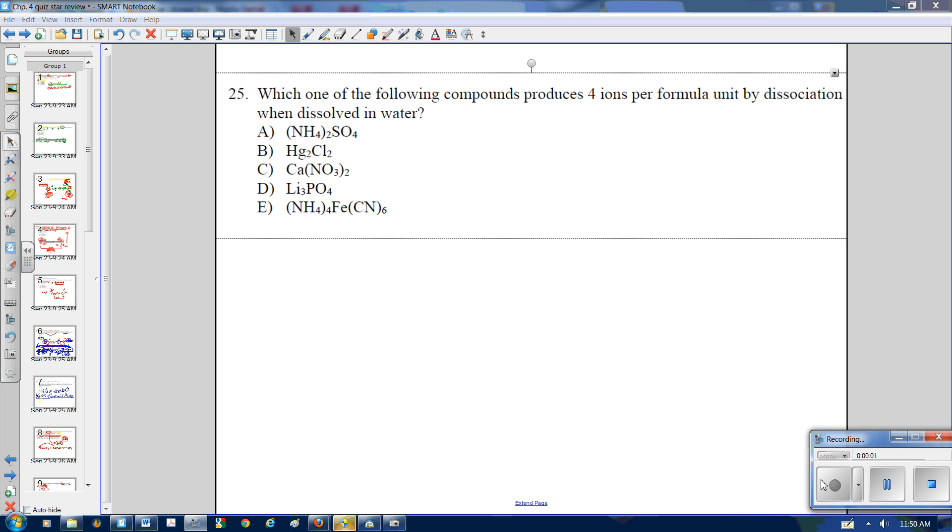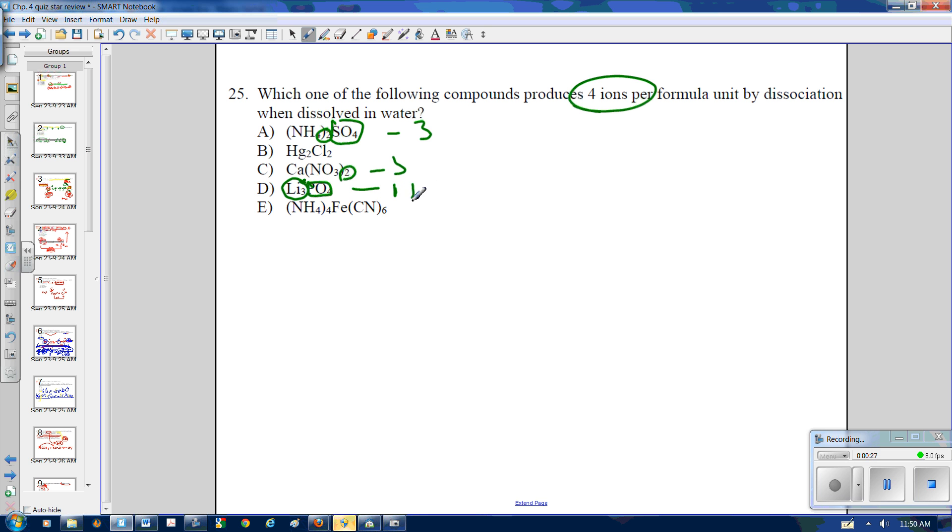When they're asking you how many ions, which one produces four ions? Four ions per formula unit. If you look right here, SO4 counts as one piece. NH4 has a subscript of two. That has three total ions. If you look here, you have calcium nitrate with two. Calcium has one, three ions. PO4 has one, and lithium has three. Therefore, D is the correct answer.